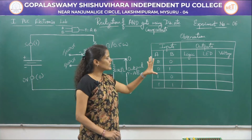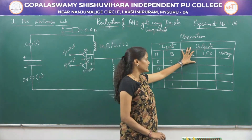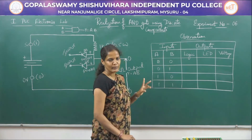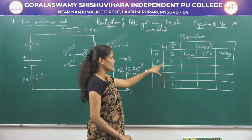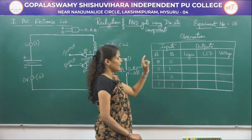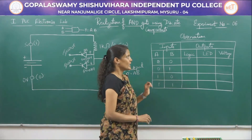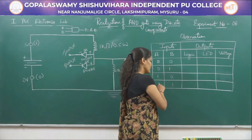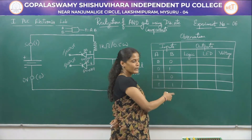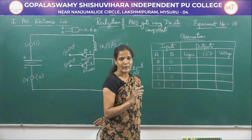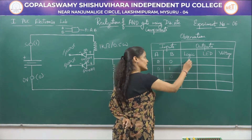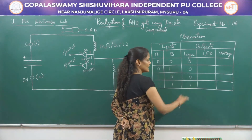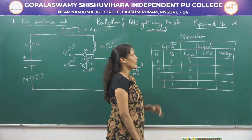In the observation, we are going to see three different columns: logic output, LED response, as well as the voltage output. When A and B are the two inputs, we will be having four different combinations: 0 0, 0 1, 1 0, 1 1. The logical output for this AND gate is that the output will be equal to 1 when both A and B are equal to 1. This is similar to multiplication: 0×0=0, 0×1=0, 1×0=0, 1×1=1. So this is the logical output of an AND gate.